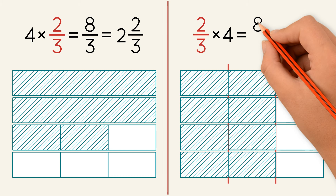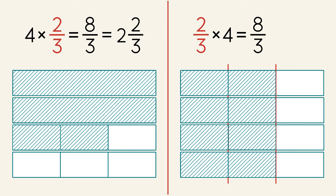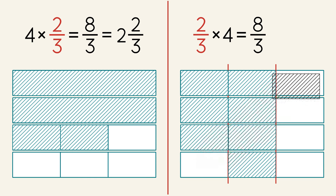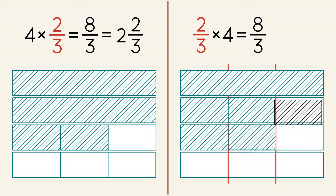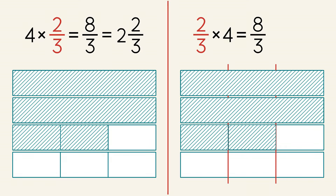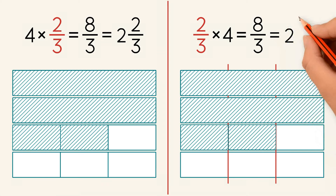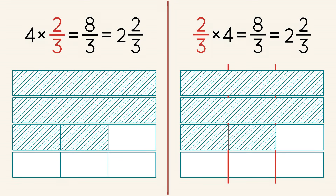That's going to be our numerator. The denominator stays the same. We get eight over three, which is an improper fraction. We regroup thirds to make one whole and another whole, so we have two wholes and two-thirds. The answer is two and two-thirds. As you can see, both equations have the same product. This shows the commutative property of multiplication, which says that the order of the factors does not change the product.